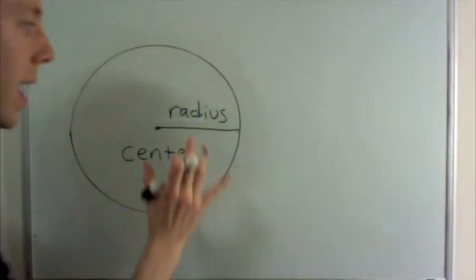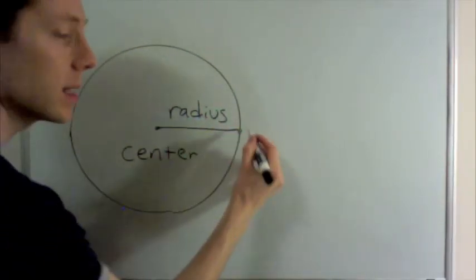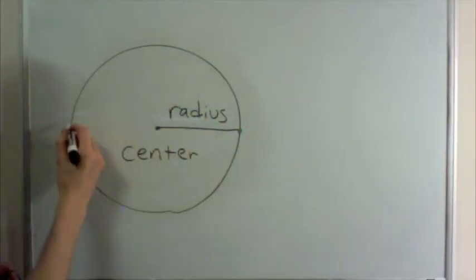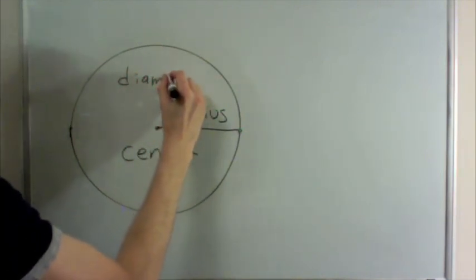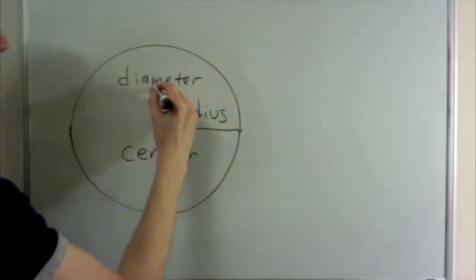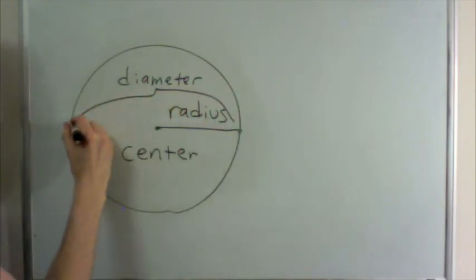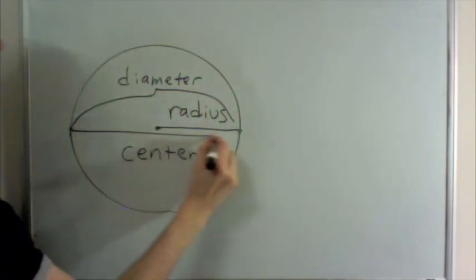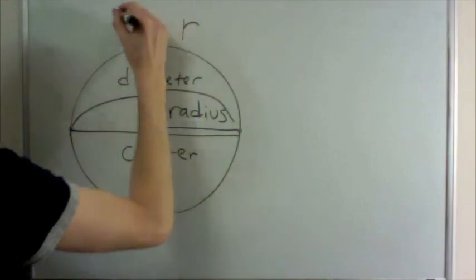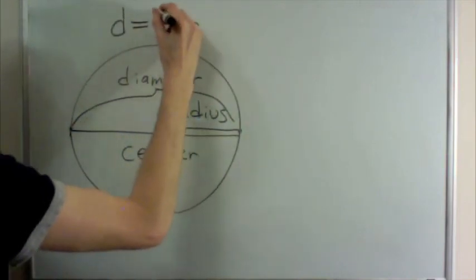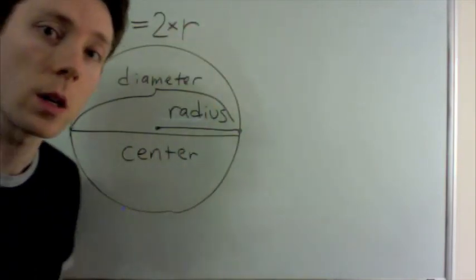The radius is about half the circle, and the distance all the way across the circle is called the diameter. The diameter is always twice the radius, and if I use the letter R for radius and D for diameter, I could write that D is equal to 2 times R.